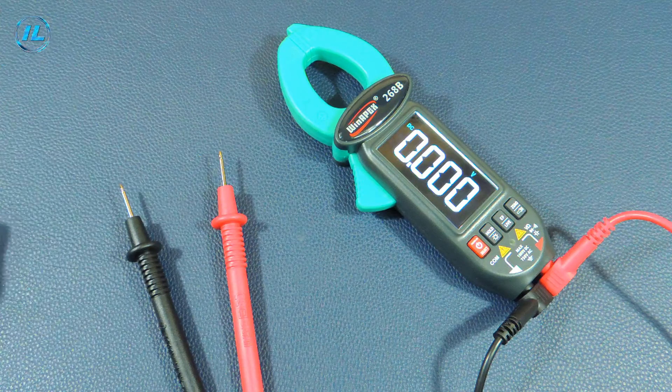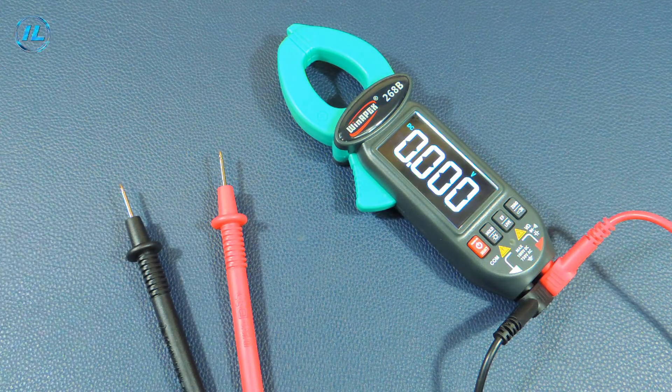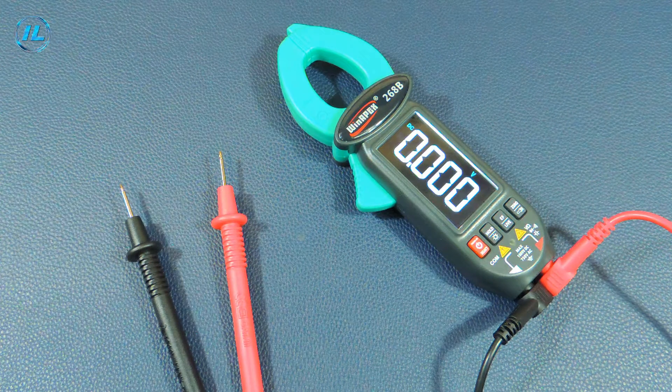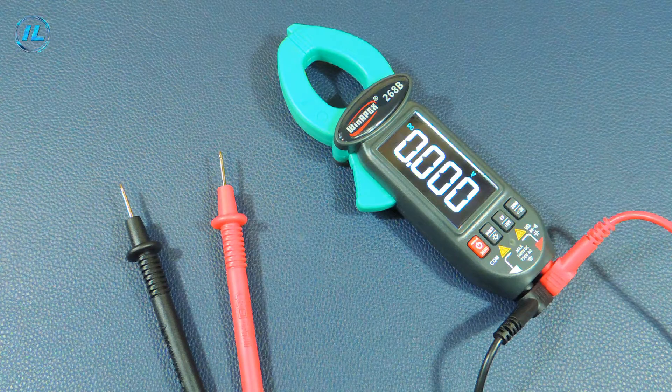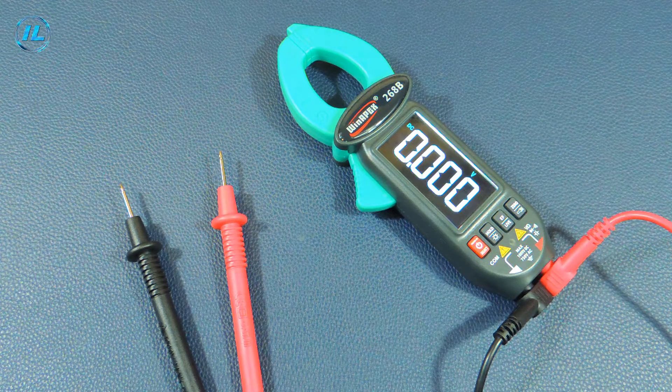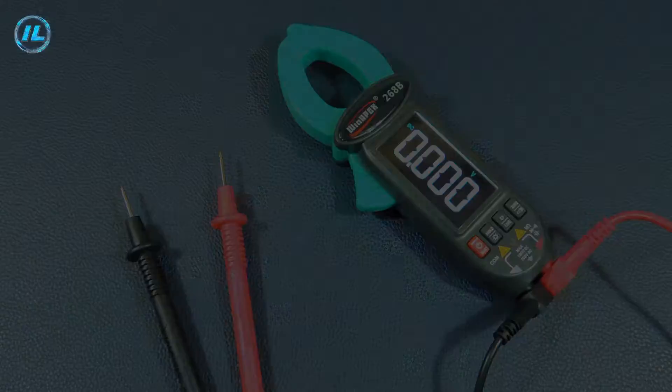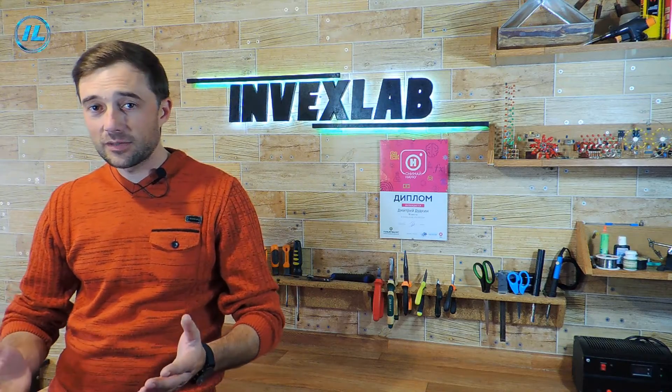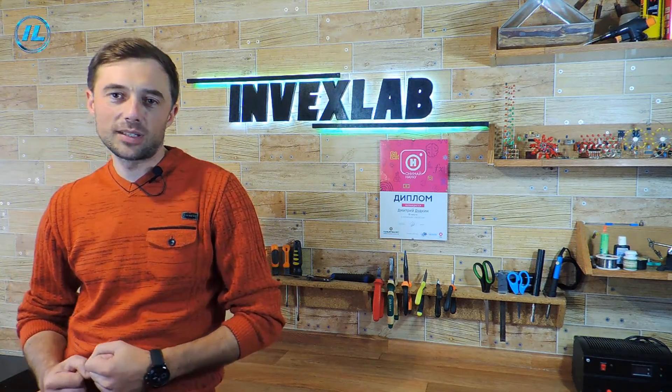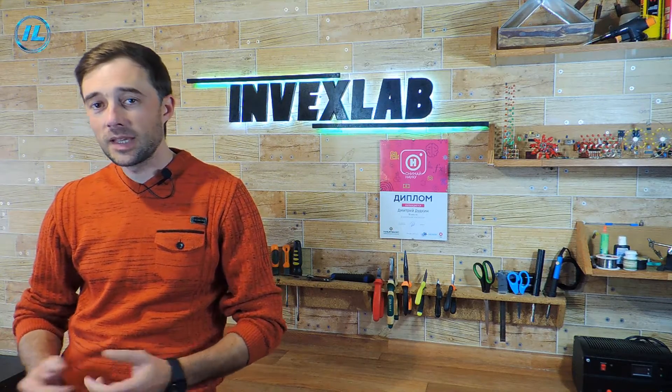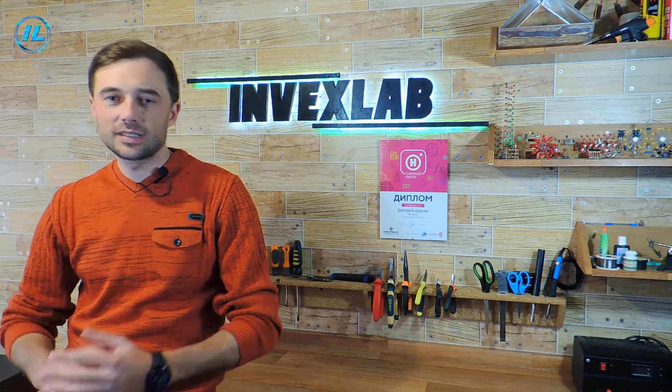It is obvious that the WinAPEX 268B current clamp is a compact, but at the same time accurate and convenient measuring device that has useful additional functions, such as screen rotation and measurement of small currents. This concludes this video, if you liked it, then click the subscribe button so as not to miss the new video on my channel, which will appear very soon. I thank you for watching and see you soon.